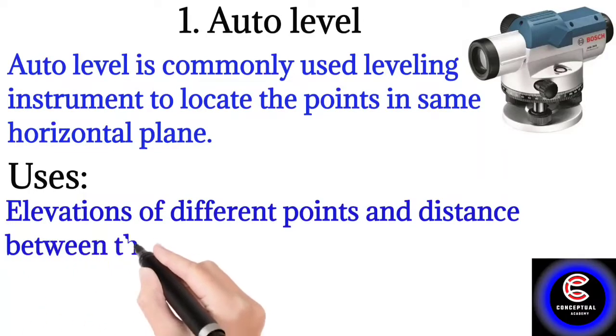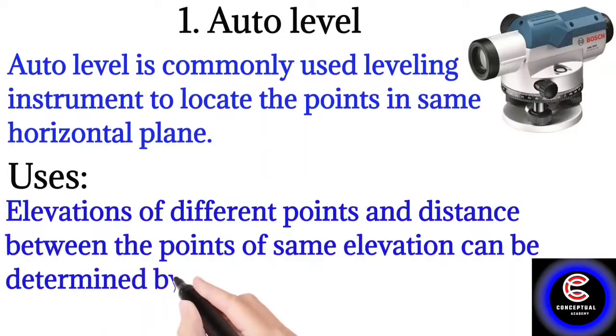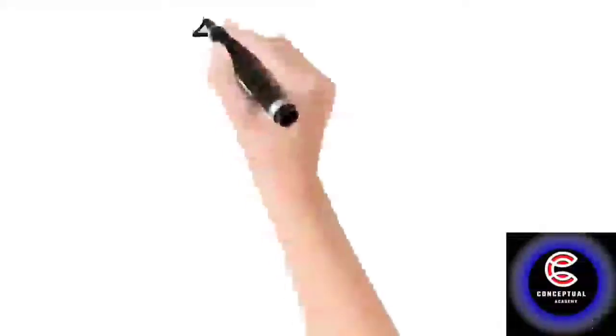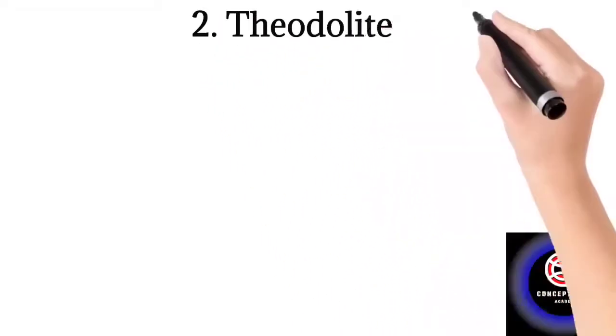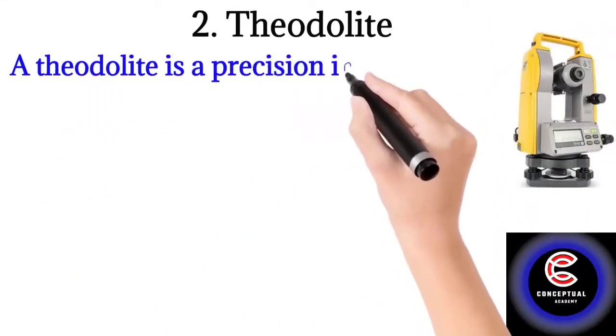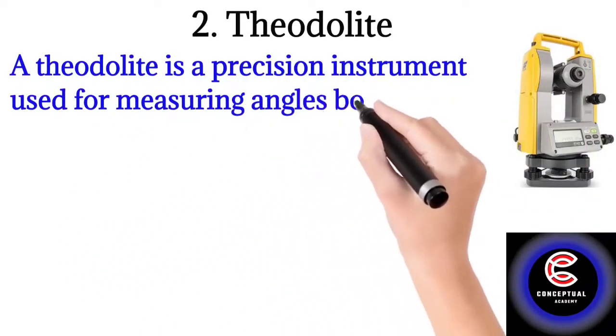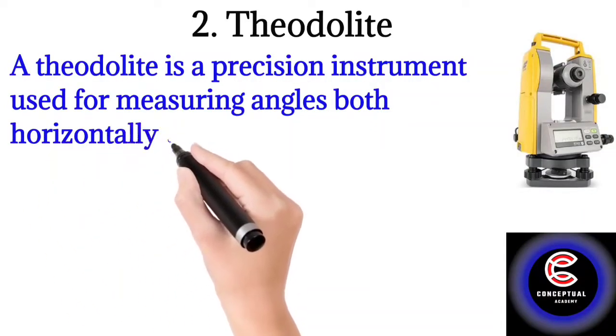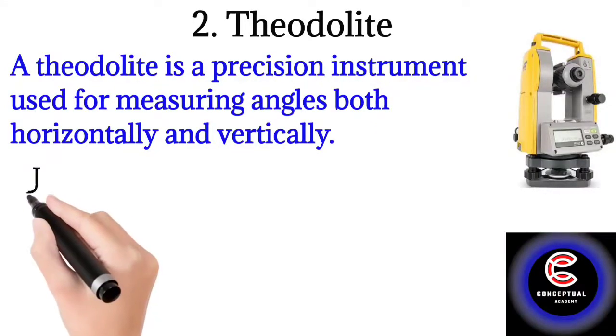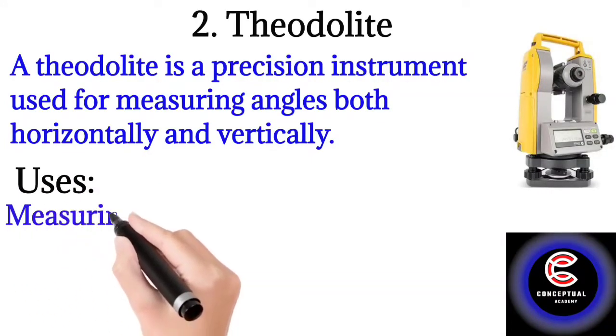Instrument number two: Theodolite. A theodolite is a precision instrument used for measuring angles, both horizontal and vertical. Use of the device: Measuring angles in the horizontal and vertical plane.